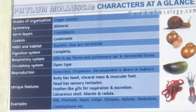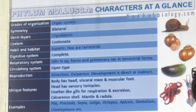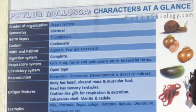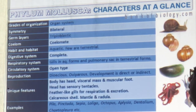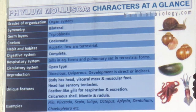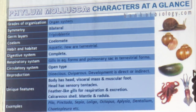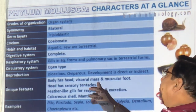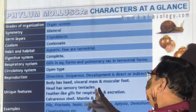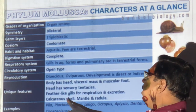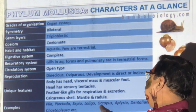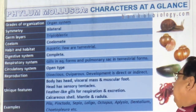Revision of Mollusca: organ system, bilateral symmetry, three germ layers, true coelom. Mostly in water, very few on land. Full digestive system with mouth and anus. Gills or pulmonary sac depending on habitat. Open circulatory system. Dioecious — male and female separate; may or may not have larvae. Unique: head, visceral mass, and muscular foot; tentacles on head; feather-like gills; calcium carbonate shell; mantle and radula present. Examples: Pila, Pinctada, Sepia, Loligo, Octopus, Aplysia, Dentalium, Chiton.